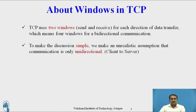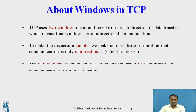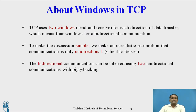To make the discussion simple, we make an unrealistic assumption that communication is only unidirectional — that is, client to server, not server to client. Client to server means two types of windows. The bidirectional communication can be achieved using two unidirectional communications with piggybacking, a concept we have already discussed in data communication.